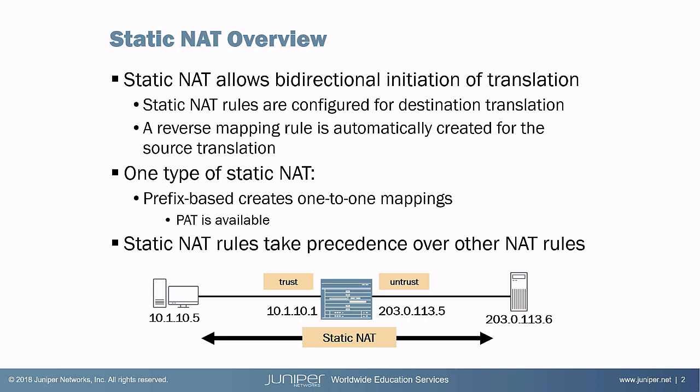For example, if you configure Source NAT, you're only going to translate in one direction. Same thing with Destination NAT. There's basically one type of Static NAT, and that's a prefix-based NAT configuration that creates a one-to-one mapping. PAT is also available — that's Port Address Translation. Keep in mind that Static NAT rules take precedence over other NAT rules, such as Source or Destination NAT rules.